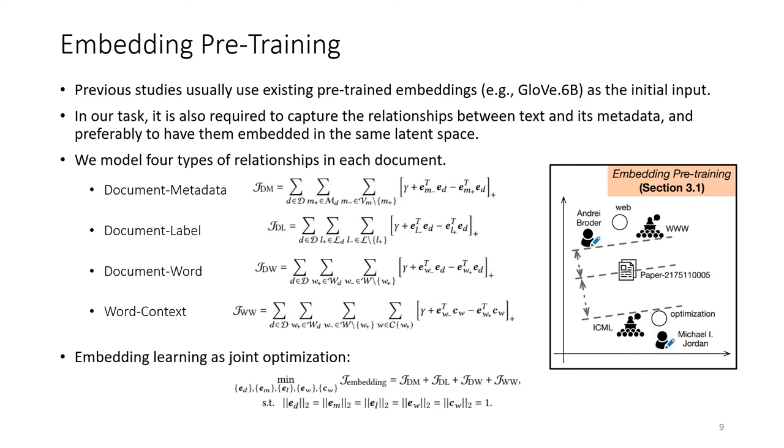To achieve this goal, we model four types of relationships in each document: document-metadata, document-label, document-word, and word-context. We use margin-based ranking loss to model each relationship. And in this case, our embedding learning can be cast as a joint optimization problem.